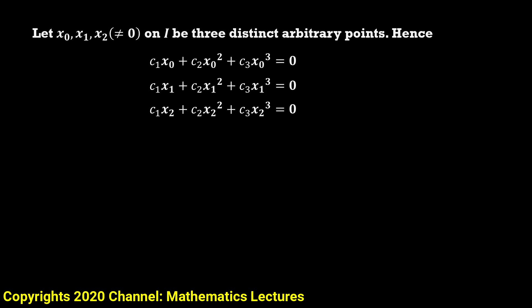We put these values here so that we can calculate c1, c2, and c3. As you can see, substituting these three points gives us a system of equations with three unknowns: c1, c2, and c3. This is a homogeneous system. The condition for linear independence is that the functions are linearly independent only when c1, c2, and c3 are all zero — i.e., we should not get any non-trivial solution. A non-trivial solution to a homogeneous system exists when its determinant equals zero.